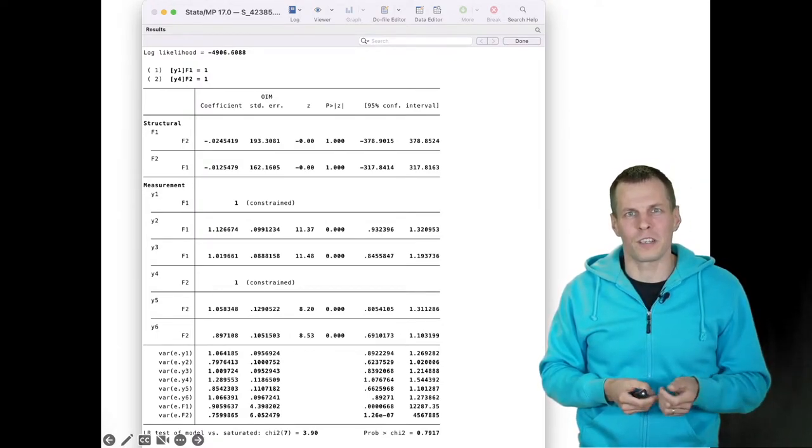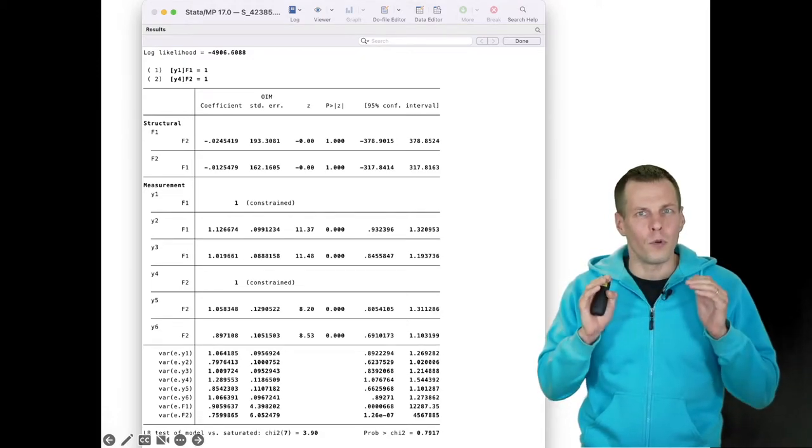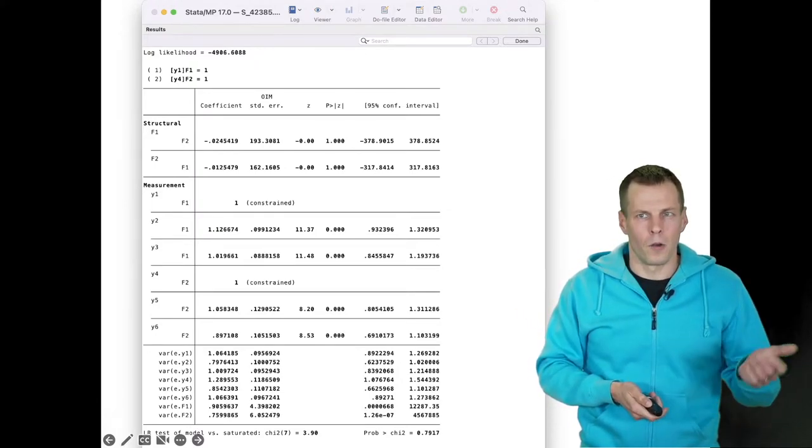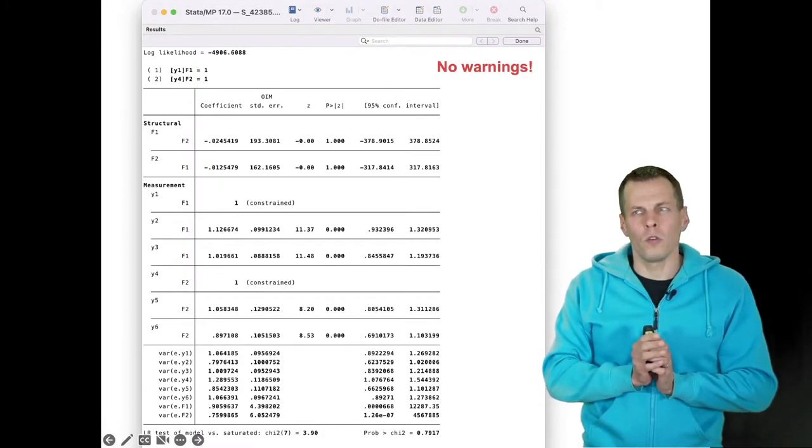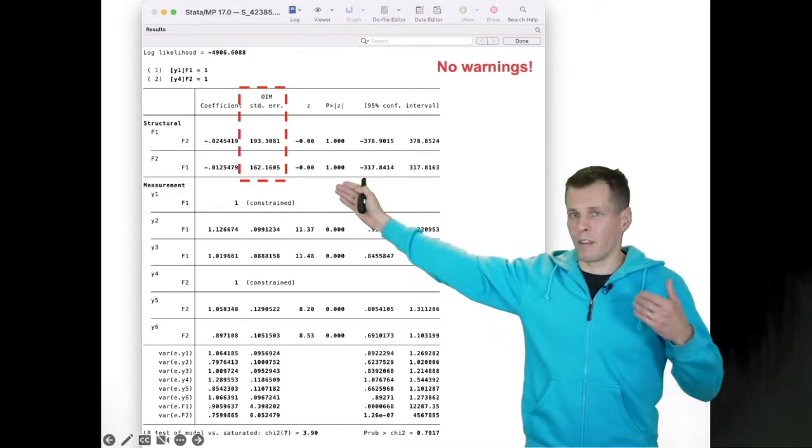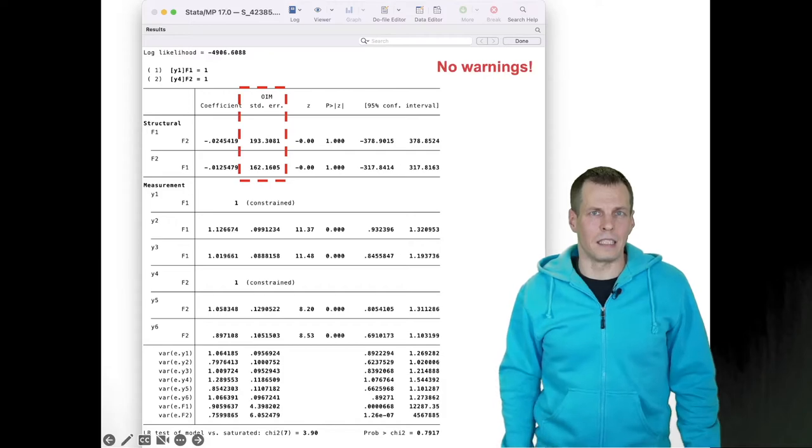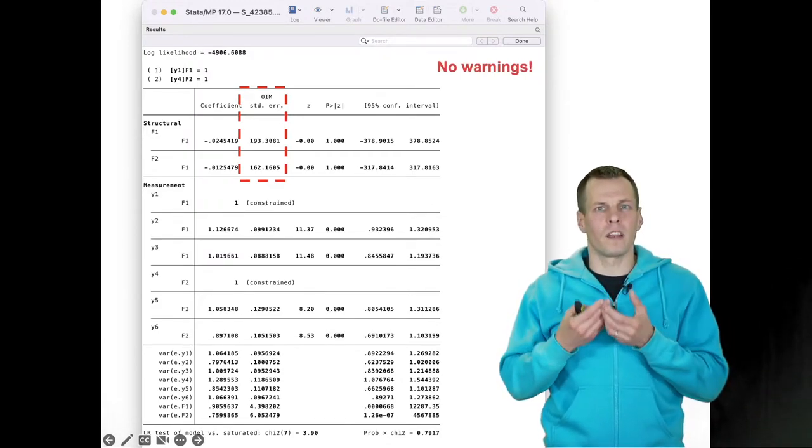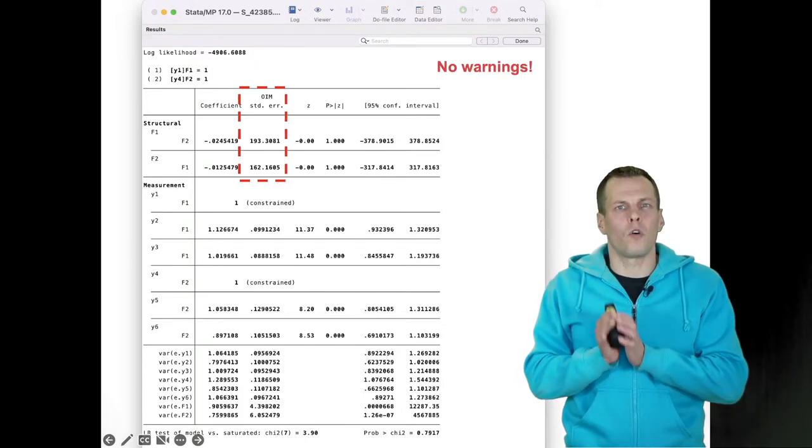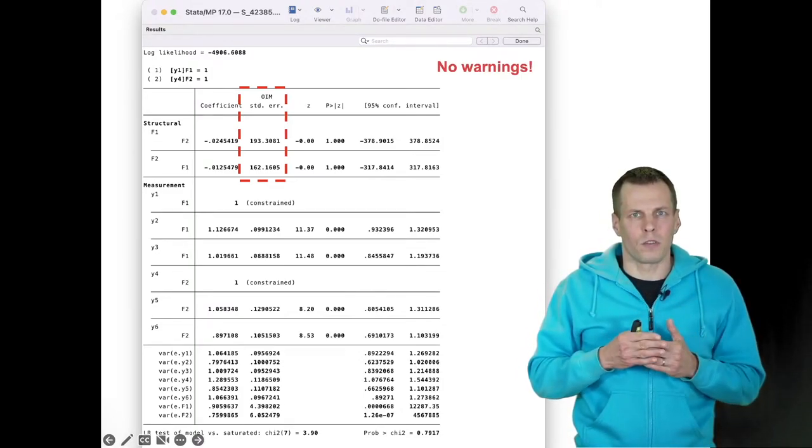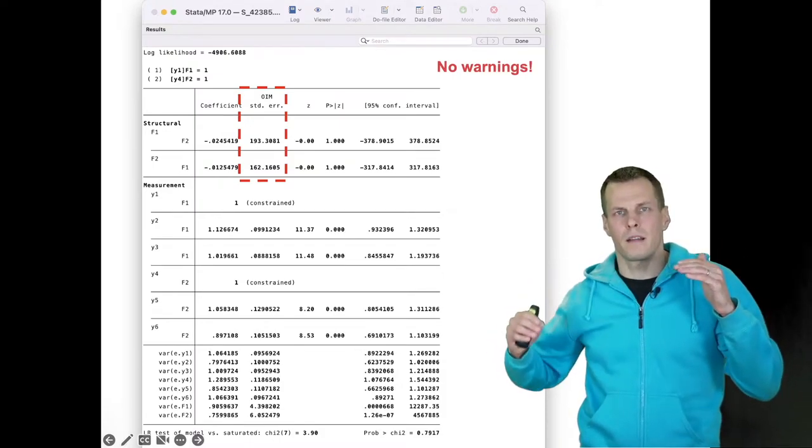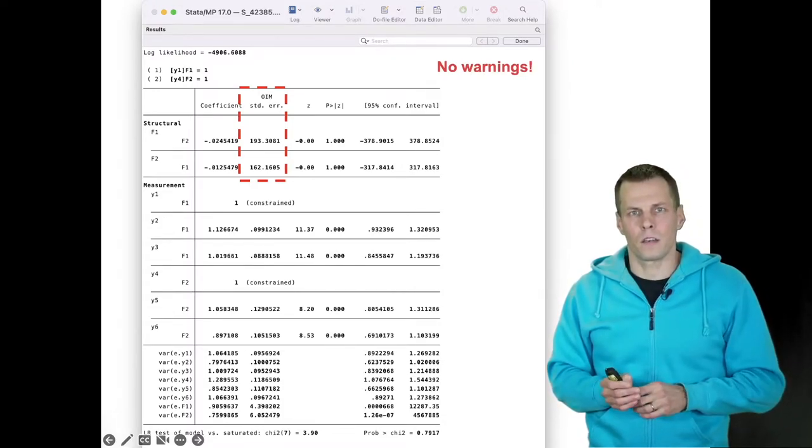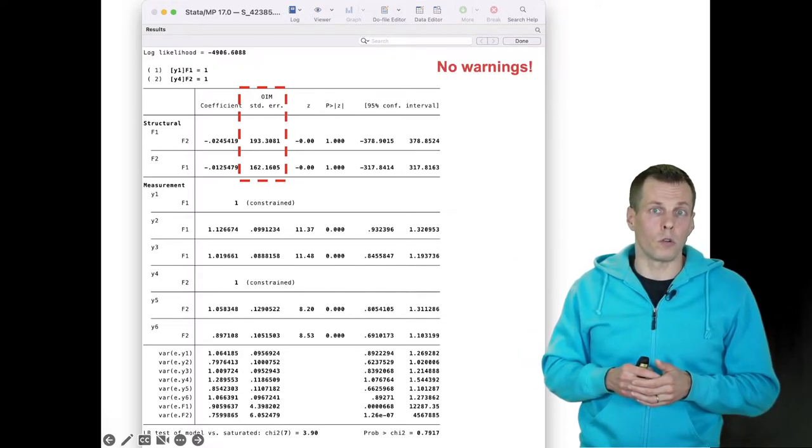But it is not identified as I explained already. So you can't always trust your software's identification checks. They work most of the time but sometimes problems like this go undetected. If you know where to look, you might see that these standard errors are very large, and that indicates that there is a problem with these two parameters. Generally if you have a linear model, then identification problems almost always involve a trade-off between two parameters.